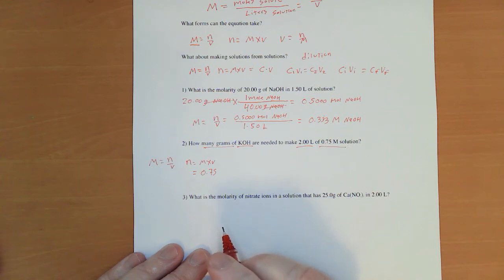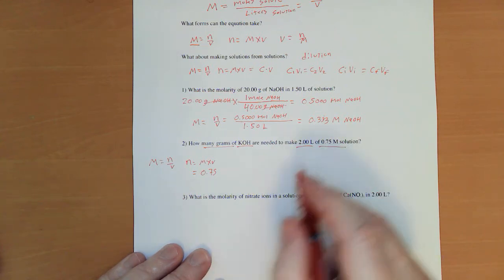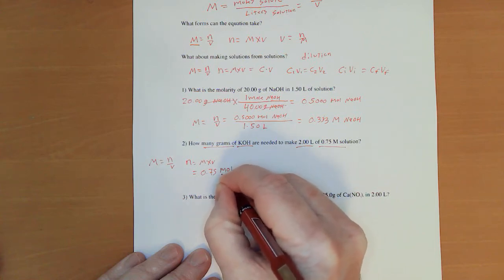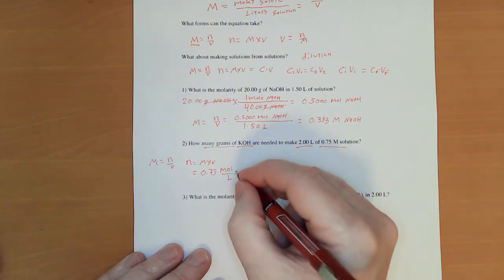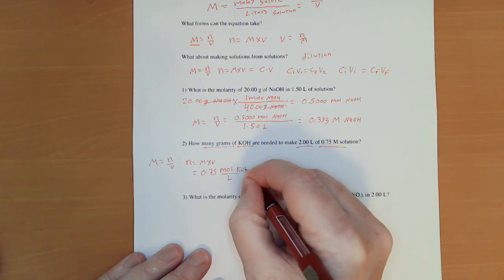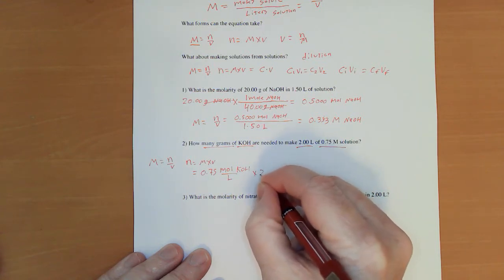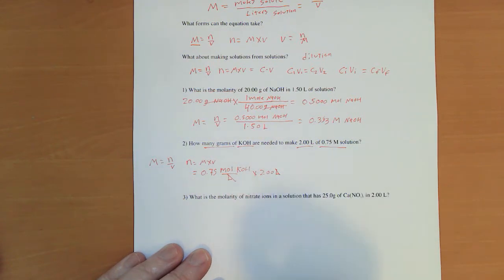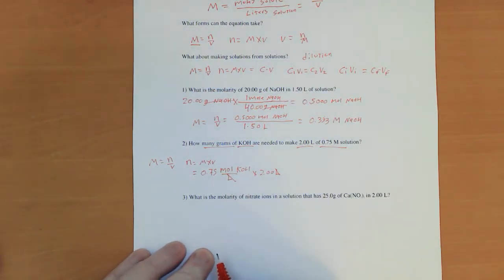Which equals 0.75. And here's a very important little trick here to make your life easier. Don't write capital M. Write moles over liters. So that when you multiply by the 2.00 liters, you actually have a unit to cancel.